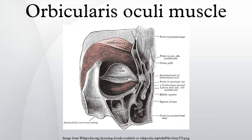The palpebral portion of the muscle is thin and pale. It arises from the bifurcation of the medial palpebral ligament, forms a series of concentric curves, and is inserted into the lateral palpebral raphe at the outer canthus of the eye.